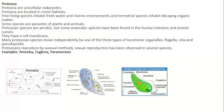Here is the structure of paramecium, showing contractile vacuoles, radiating channels, micronucleus, macronucleus, cytoplasm, food vacuoles, pellicle, oral groove, gullet, cell mouth, and anal pore. The structure of euglena includes a nucleus, flagellum, contractile vacuole, photoreceptor, stigma or eyespot, chloroplast, and cytoplasm. The locomotory organ of euglena is the flagellum; for amoeba it is pseudopodia; and for paramecium it is cilia.